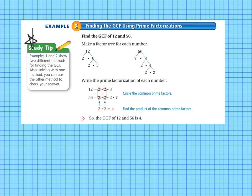So we're going to find the greatest common factor of 12 and 56. We make a factor tree for each number. So 2 times 6 equals 12, and 2 times 3 equals 6. So we'll circle our prime factors. 56 is 7 times 8, 7 is circled, 2 is circled, and 2 and 2 are circled.